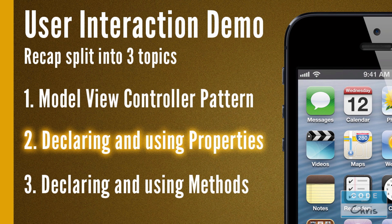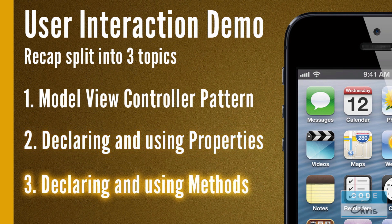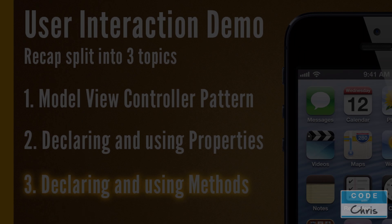Second, we're going to look at how to write our own properties instead of just creating them through Interface Builder like we have been in the last few demos. And in the third section, we're also going to do the same with methods — how to write our own methods rather than just creating them through Interface Builder. Okay, let's get started.